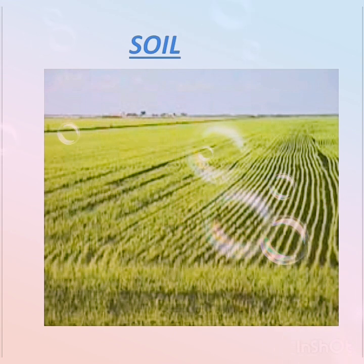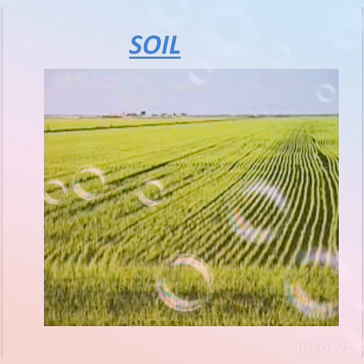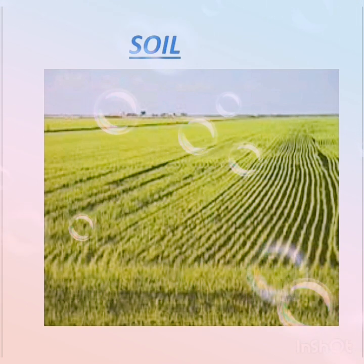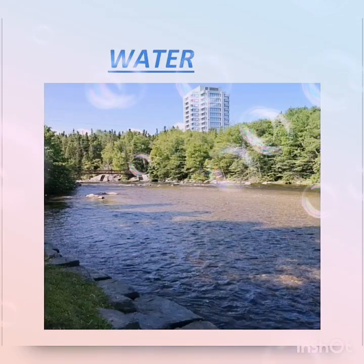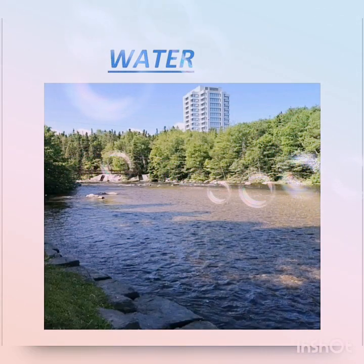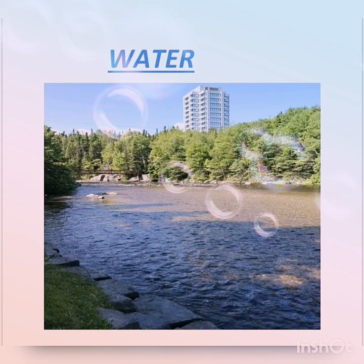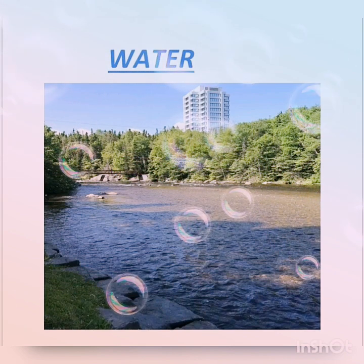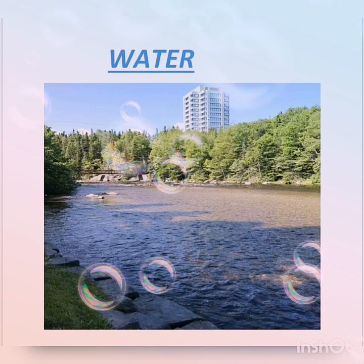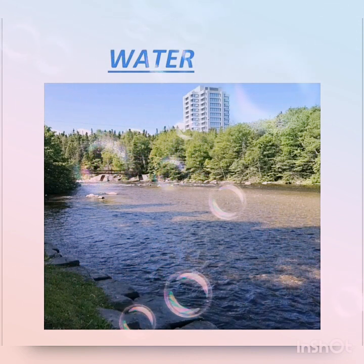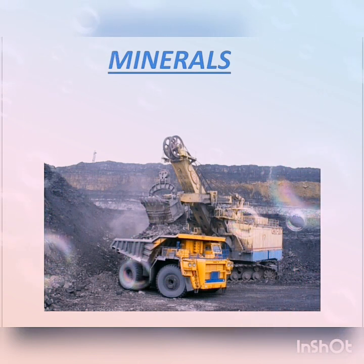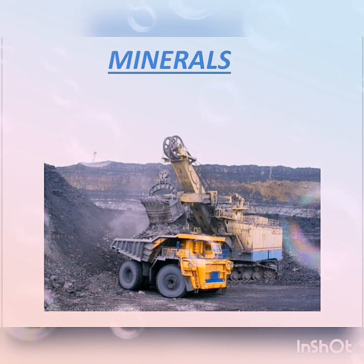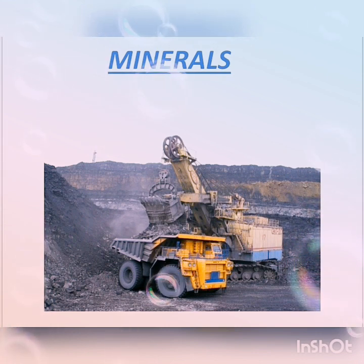Soil: areas with fertile soil are densely populated. That is why the fertile plains of the Ganga and Brahmaputra are densely populated regions. Water: the river valleys of the world are densely populated, while deserts have sparse population, because people want to live where fresh water is available for various purposes. Minerals: areas with mineral deposits are more populated, as the availability of minerals enhances the value of a region.